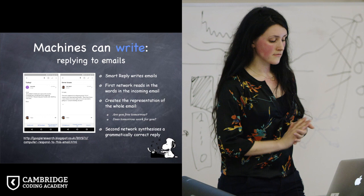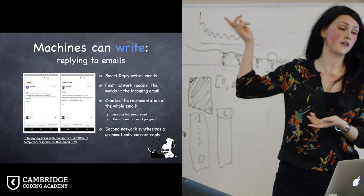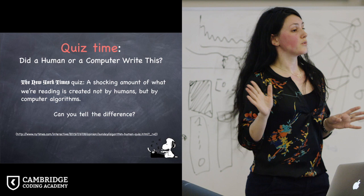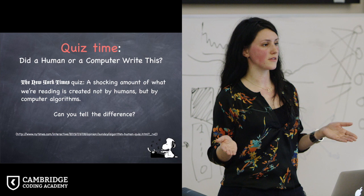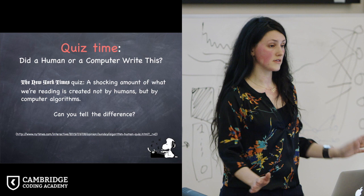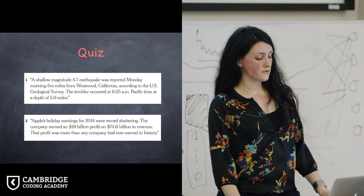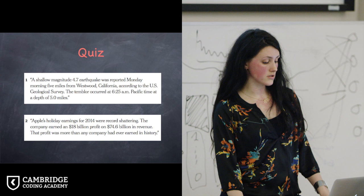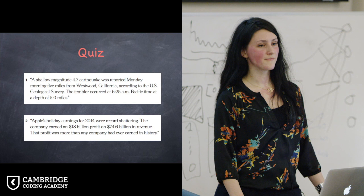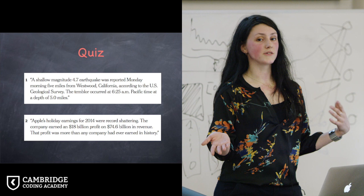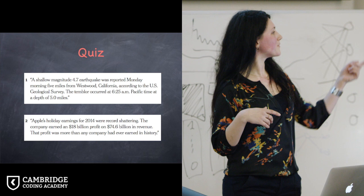And then, quiz time again. Quite recently, just half a year ago, I've seen this article on the New York Times, which says it has like a shocking title saying, so many different things that we read nowadays are actually not written by humans. Can you distinguish between the ones that are automatically generated and the ones that are written by humans? Let's try to do that. The first one reads as, A shallow magnitude 4.7 earthquake was reported Monday morning five miles from Westwood, California, according to the U.S. Geological Survey. The trembler occurred at 6:25 a.m. Pacific time at a depth of five miles. Who thinks that this has been written by a human? Who thinks that that was written by a machine? So, why? Why a human? Why a machine? There is a capital letter in U.S.